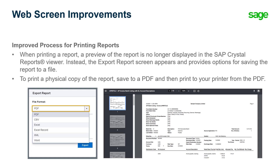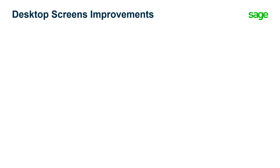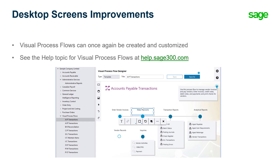Note that this change does not affect the process for printing customized SAP Crystal Reports opened from the reports list. Now, let's review the desktop screen improvements. Visual process flows can once again be created and customized. Please note that the specifics of how to do this have changed. For more information, please refer to the help topic for visual process flows.